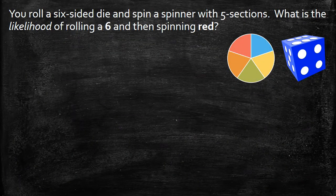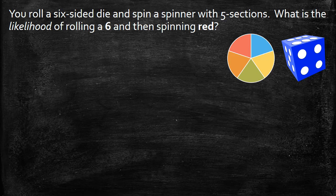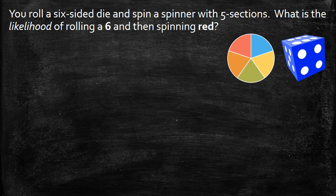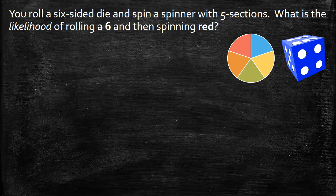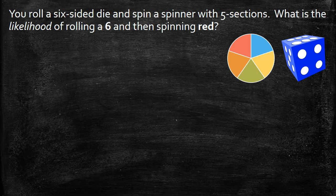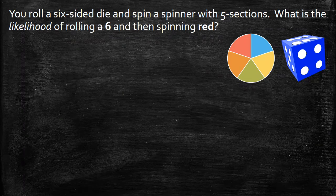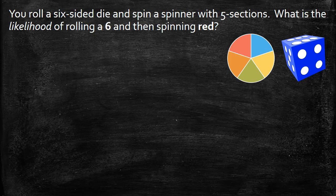Now we can take this a little bit further and we can see where we can go with this. You're going to roll a six-sided die and spin a spinner with five sections on it. What is the likelihood of rolling a six and then spinning a red? So I use the word likelihood here because that's just synonymous or means the exact same thing as probability when we see it in a question.